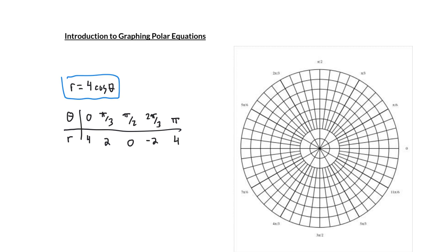And this time when I try to plot these points, what I end up seeing is something a little different. I start with a radius of 4 at an angle of 0, and then I move to a radius of 2 at an angle of pi over 3, and then I move to the pole, and then I move to this negative radius, and then I come back full circle exactly where I started.